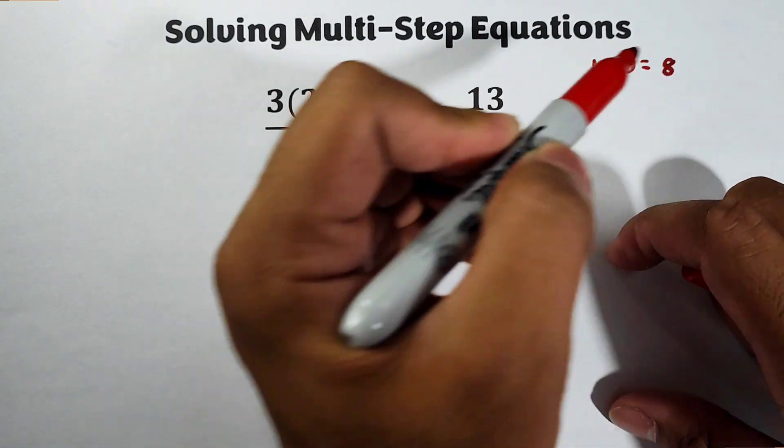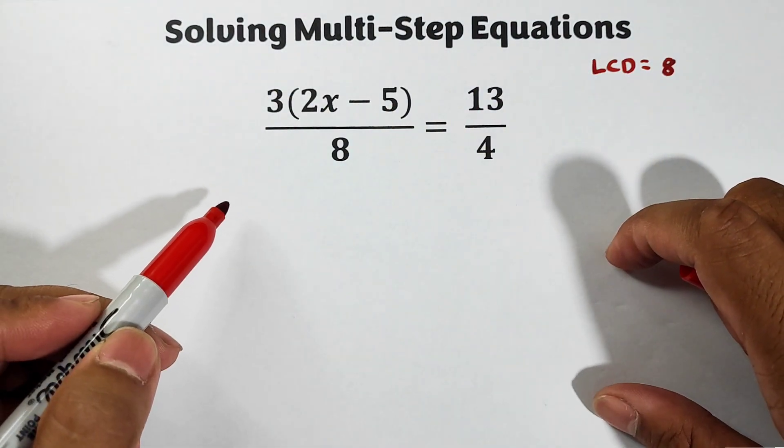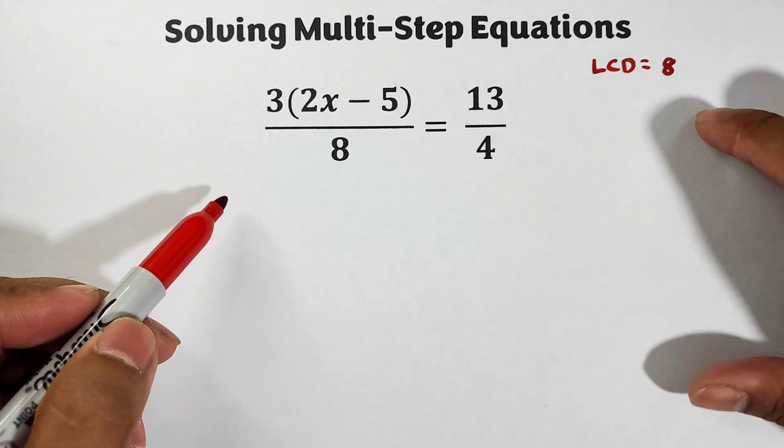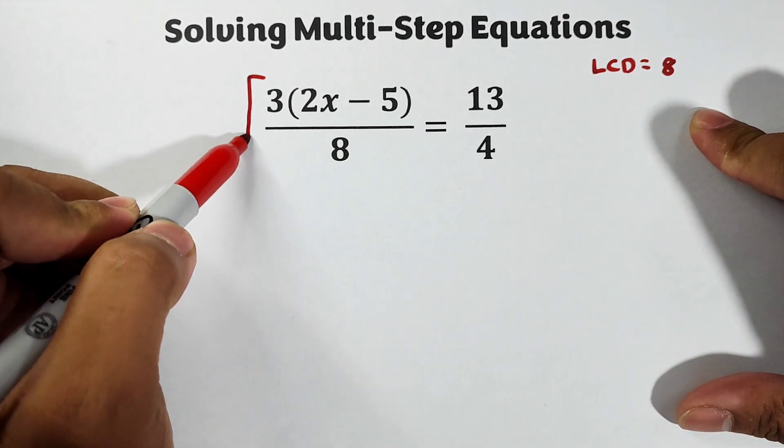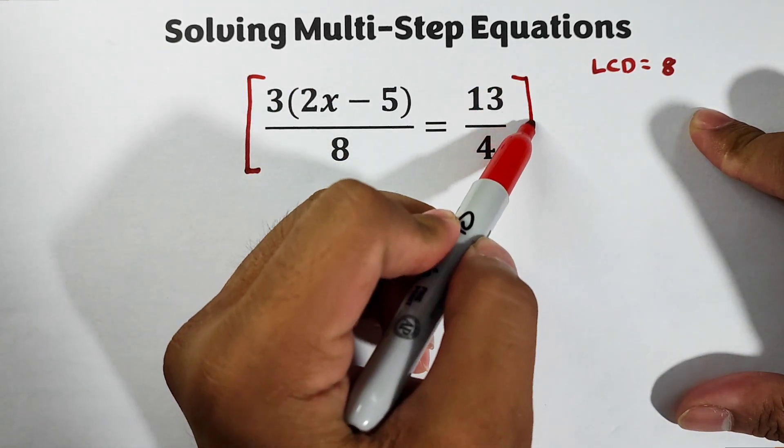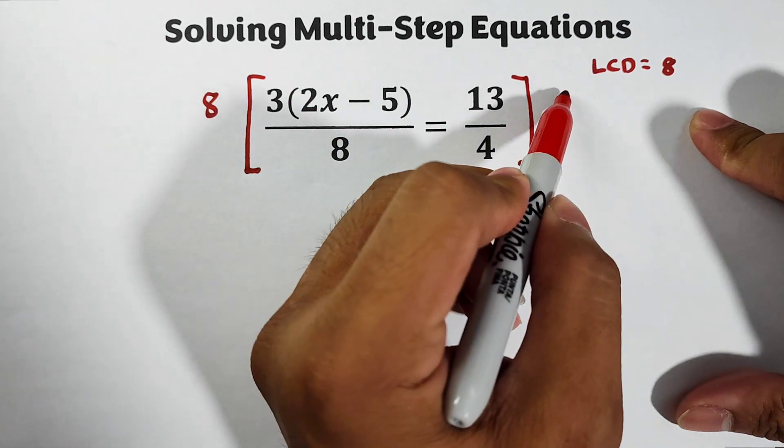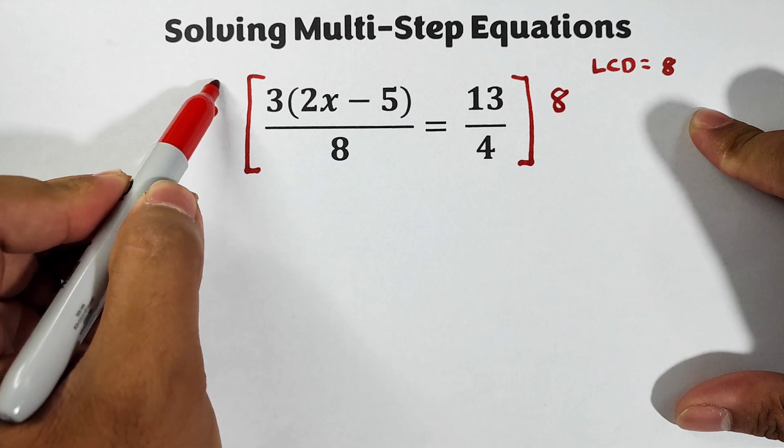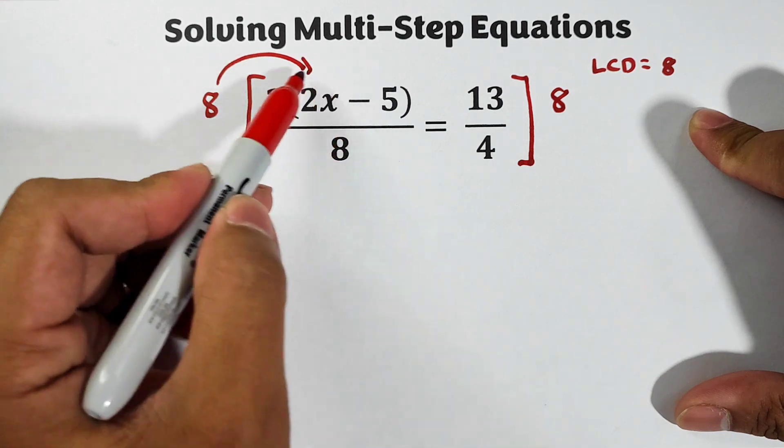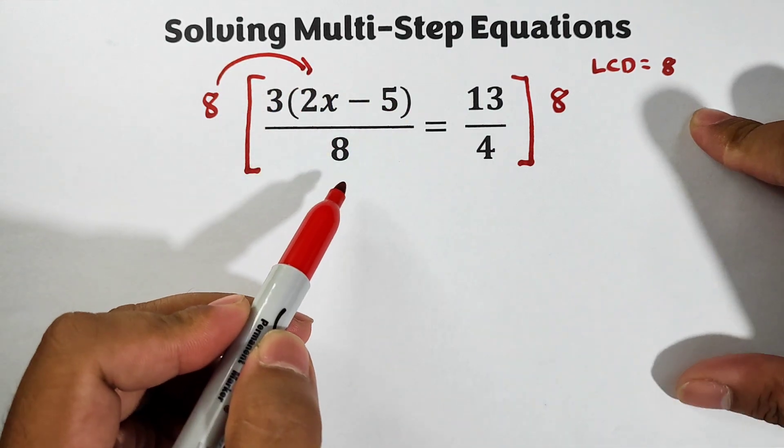So how are we going to multiply this one by the LCD? 8 multiply the whole equation like this one. Put it here, 8 and 8, multiply it one by one.